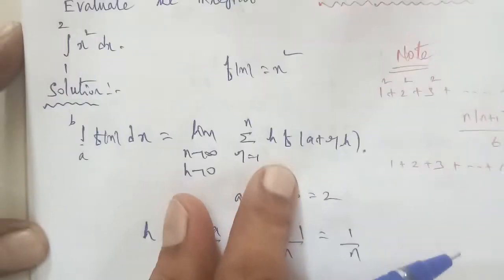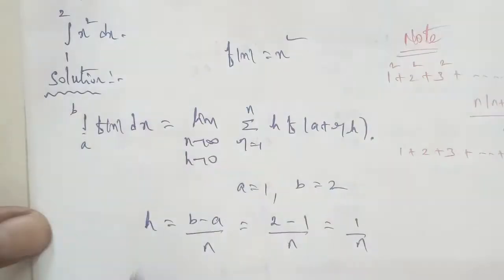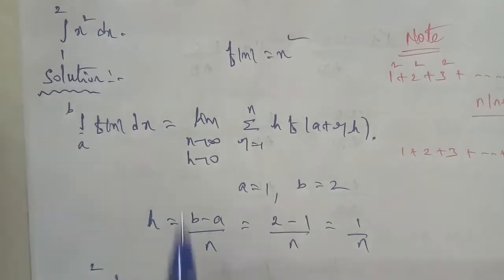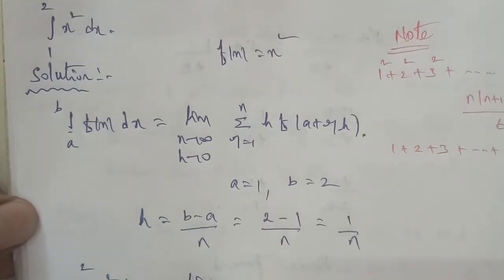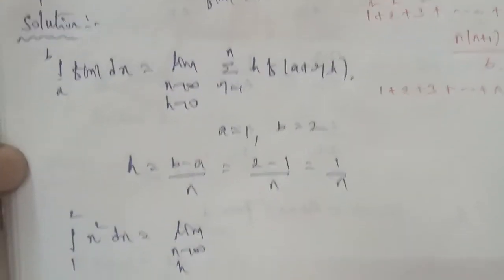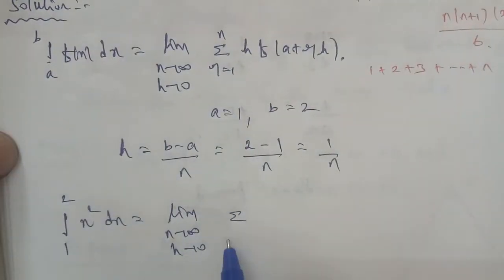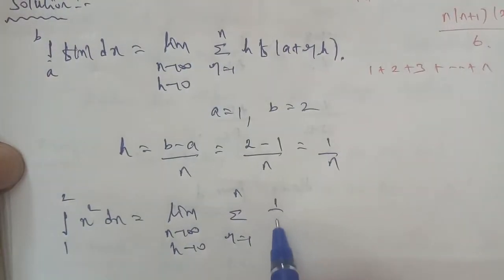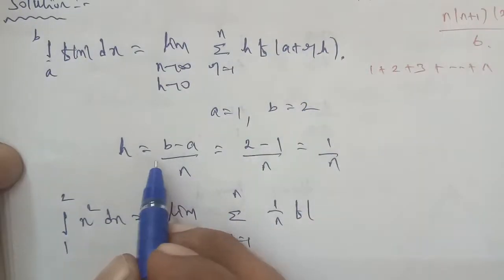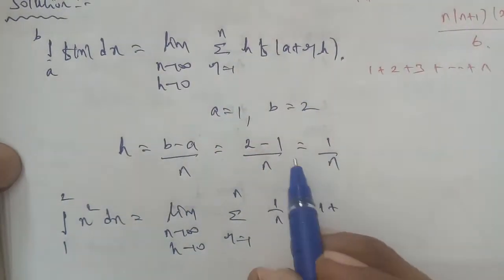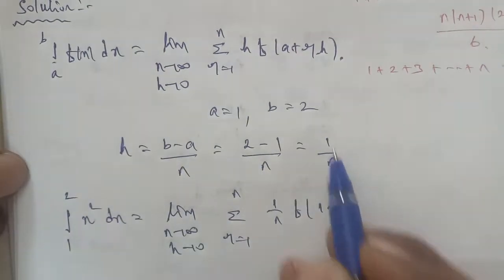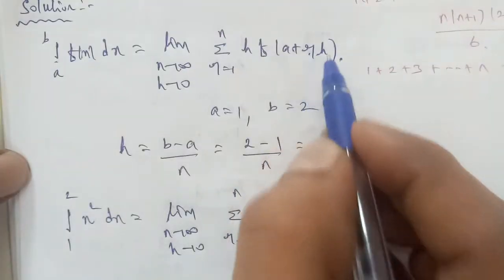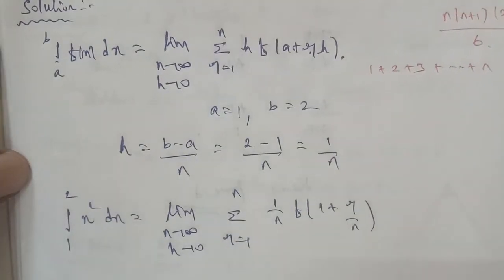So, using the formula, the given question integral 1 to 2 x squared dx is equal to limit n to infinity and h to 0, sigma r is equal to 1 to n. The h value is 1 by n.